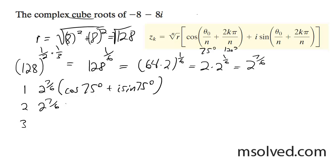2 raised to the 7/6, cosine of 195 degrees plus i sine of 195 degrees, and 2 raised to the 7/6, cosine of 315 degrees plus i sine of 315 degrees.